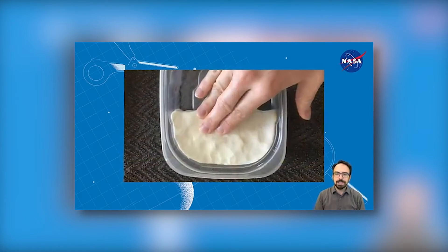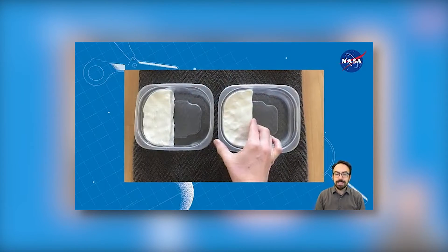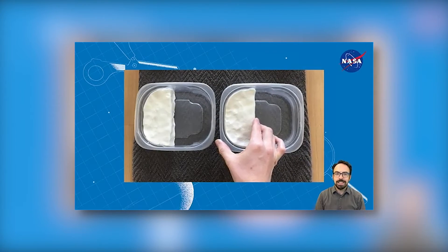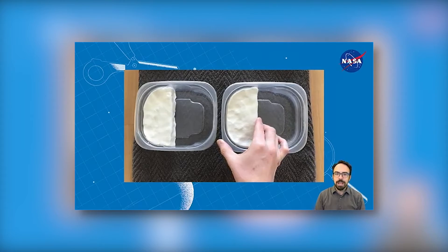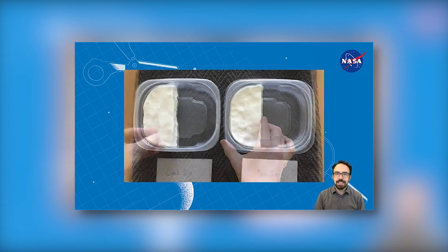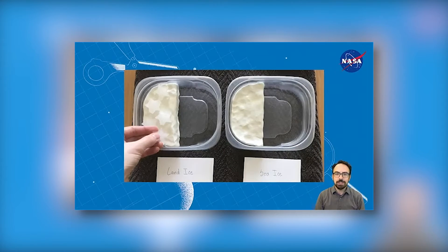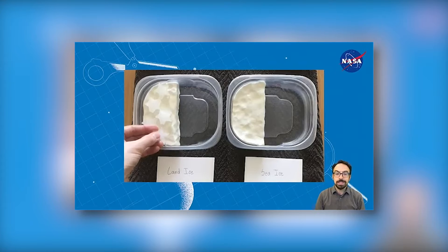Take your clay and press equal amounts into one side of both plastic containers, making a smooth, flat surface representing land. Again, if you don't have clay, try piling some small rocks into the tub to represent land. In one container, put as many ice cubes as possible on the flat clay or rock pile. This represents land ice.